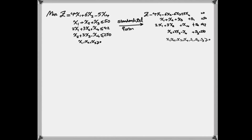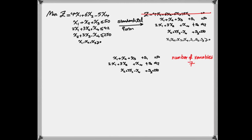For the time being, I want to dismiss the objective function equation and suppose that we only have a system of seven decision variables and three constraints. If I have this system of equations, we can solve it, but one of the challenges is that we have seven variables and only three equations, so we are missing four equations to solve this system.